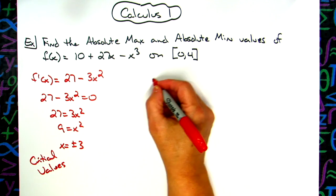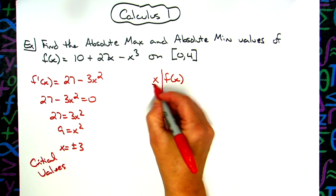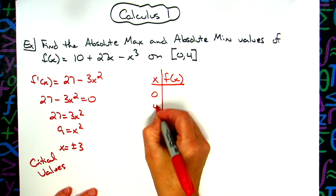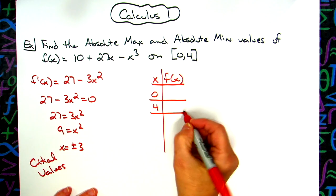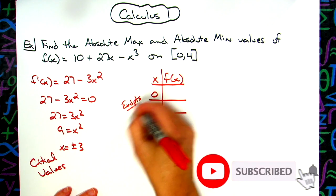So now I'm going to make an x f(x) table. Same thing as an xy table. I definitely want to put the 0 and 4 in because those are my endpoints.